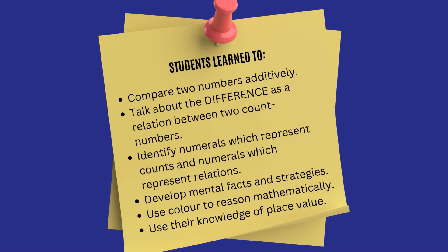They also had the chance to learn about different numerals and how to represent them. For instance, in our example the numbers 57 and 24 were count numbers and they could be assigned to individual beads. But the difference, which was 33, was not a count number and it couldn't be assigned to any bead — instead this was an action being performed on the abacus string. We used a green arrow above the beads to show the difference. They also developed their mental facts and strategies by using the colour on the string to help them reason mathematically. And finally they had the opportunity to use some of their prior skills and knowledge of place value to name the difference.